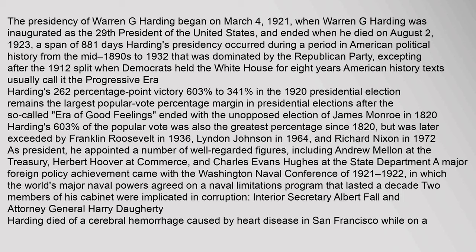Harding's 26.2 percentage point victory — 60.3% to 34.1% — in the 1920 presidential election remains the largest popular vote percentage margin in presidential elections after the so-called 'era of good feelings' ended with the unopposed election of James Monroe in 1820. Harding's 60.3% of the popular vote was also the greatest percentage since 1820, but was later exceeded by Franklin Roosevelt in 1936, Lyndon Johnson in 1964, and Richard Nixon in 1972.